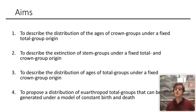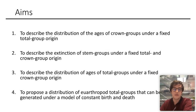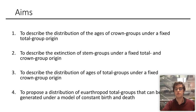Thus we have the following aims: first, to describe the distribution of crown group ages when we have a fixed total group origin; also to describe statistically the extinction of stem groups after the crown group forms when we have a fixed total group and crown group origin; then to flip the analysis and maintain a fixed crown group origin to estimate the origin of total groups; and finally to bring in some empirical data and look at the divergence of euarthropods.